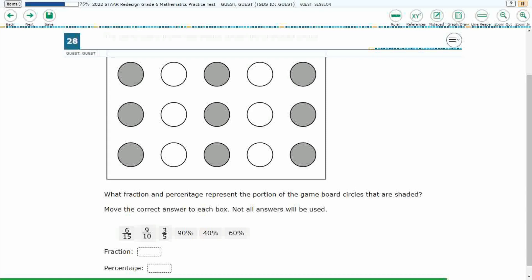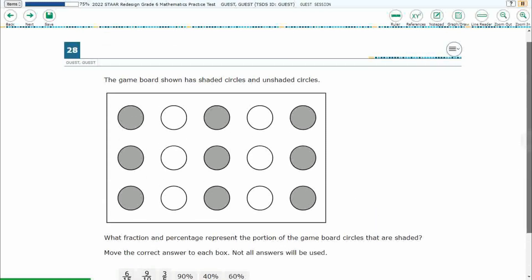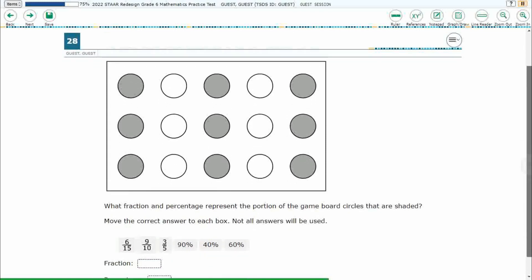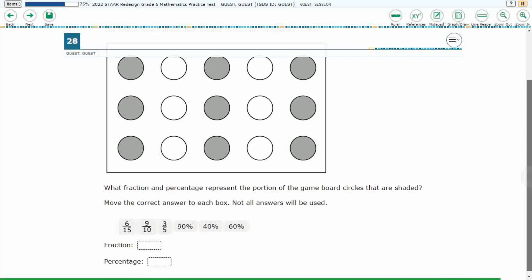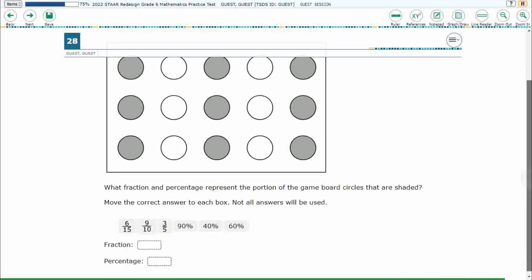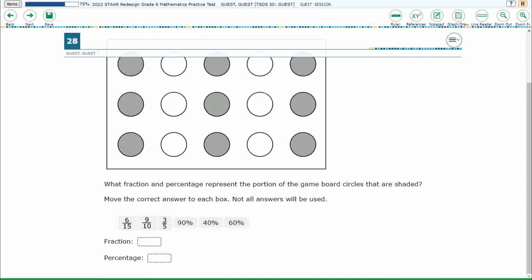So we've simply got some circles on this game board, shaded and unshaded. We're looking for the fraction and percentage that represents the shaded portion. Now this is hot text, so you have to select two different answers. Now notice that once I put that 6 over 15 in there, these other fractions grayed out. And the reason it's doing that is because you can't use any of those fractions down here because the bottom one needs a percentage.